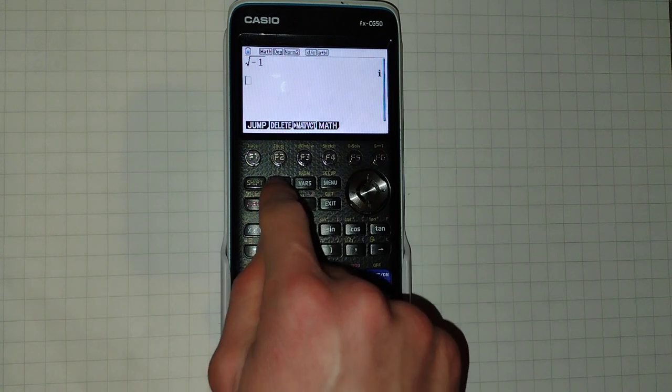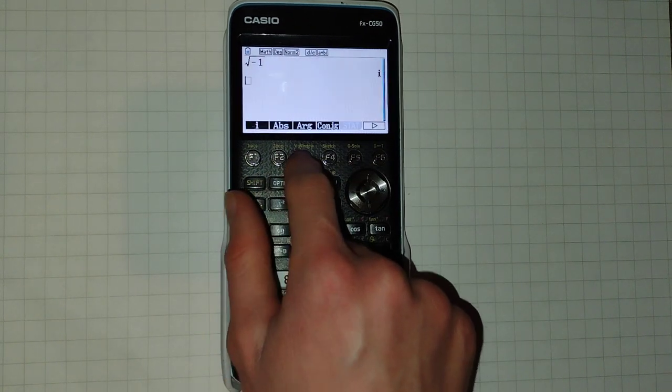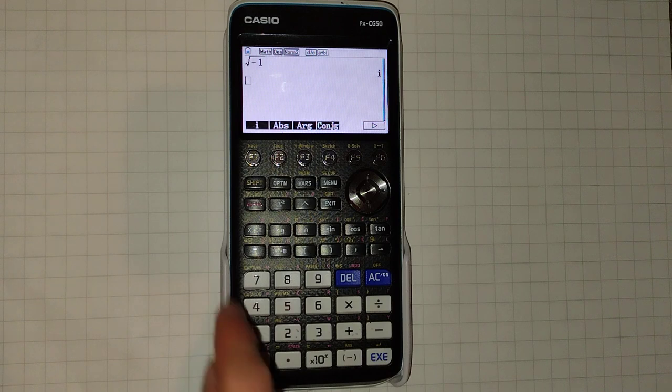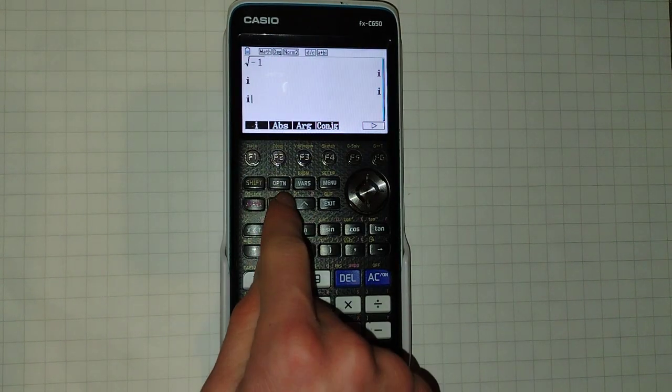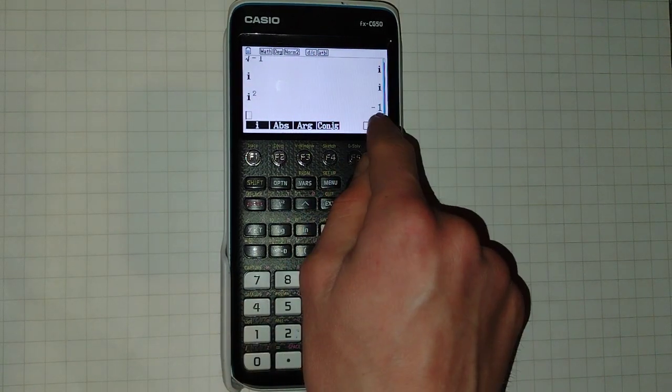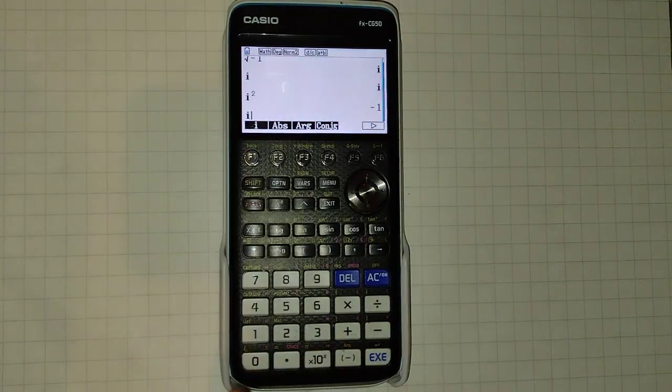Now in complex number mode, we're going to click option and then F3 to get the complex menu. As you can see, we can get I by pressing F1. And sure enough, I squared gives us negative 1. You can also get I by doing shift 0.